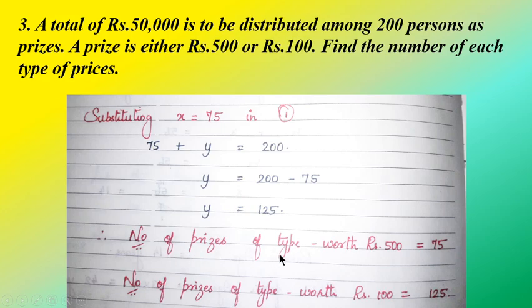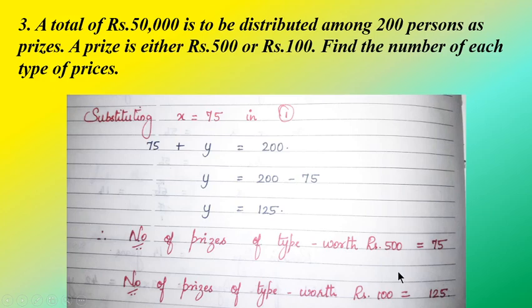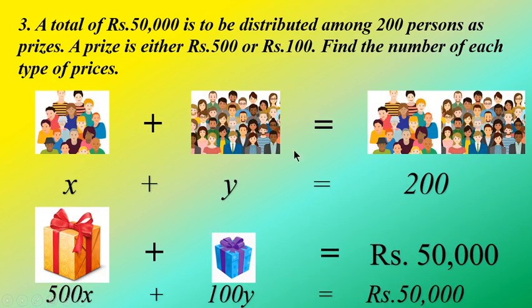So we got the answer: the number of prizes of type worth rupees 500 is x equals 75, and the number of prizes of type worth rupees 100 is y equals 125. When you substitute these values back, 75 plus 125 equals 200, confirming equation 1. And substituting into the amount equation also gives rupees 50,000, confirming equation 2.